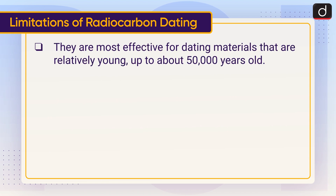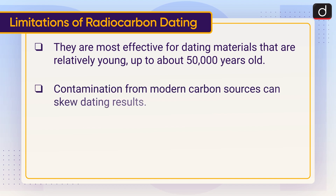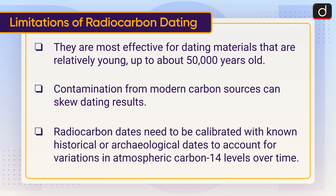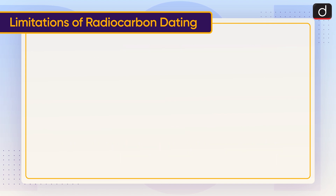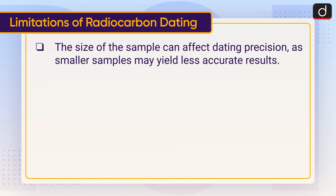Radiocarbon dating is most effective for dating materials that are relatively young, up to about 50,000 years old. Contamination from modern carbon sources can skew dating results. Radiocarbon dates need to be calibrated with known historical or archaeological dates to account for variations in atmospheric carbon-14 levels over time. The size of the sample can also affect dating precision, as smaller samples may yield less accurate results.